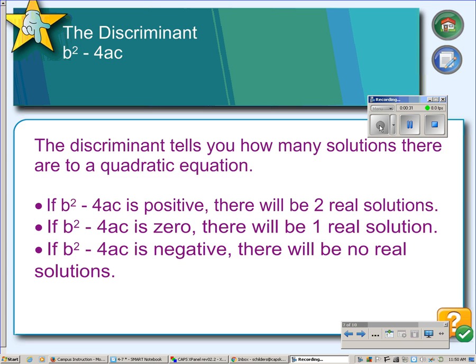Once you know the answer to b squared minus 4ac, which is the discriminant, if the discriminant is positive, that means you're going to get two real solutions. If the discriminant equals zero, there will be only one real solution. And if the discriminant is negative, there will be no real solutions.